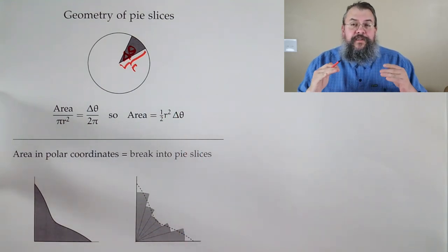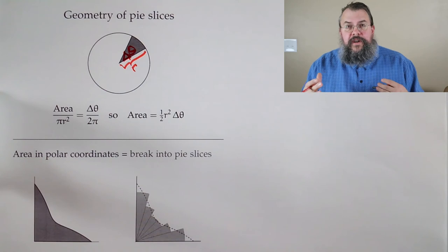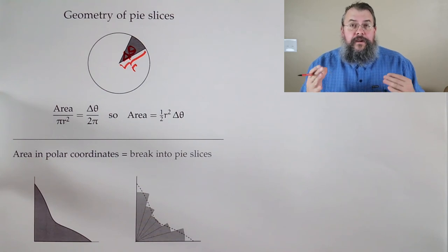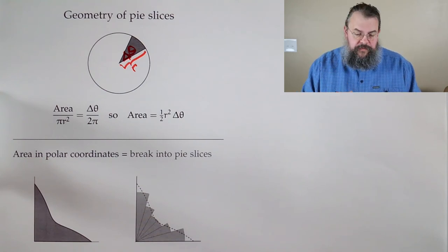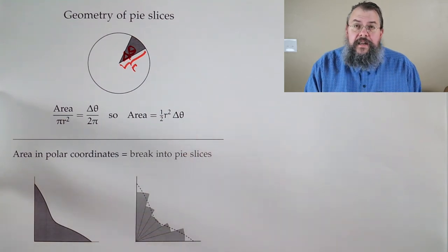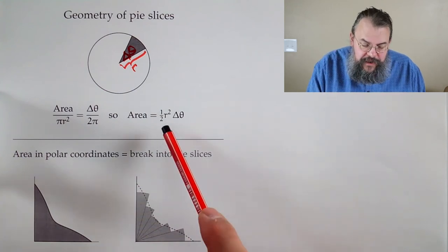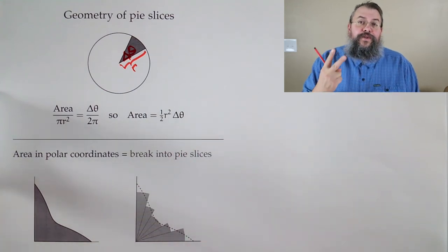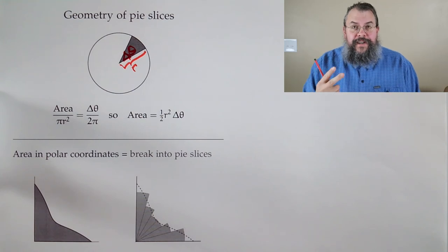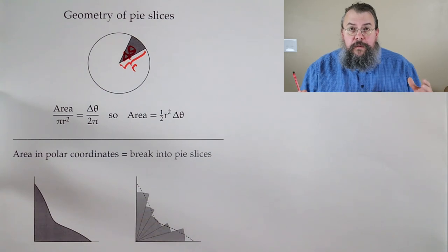Now, one way to see that this makes sense is to think about, well, OK, if I have an area, I should have two measurements of distance involved. You know, like length times width, that's two distances. And here, the change in theta is not a distance measurement. But the r squared, that's two distances, right? Because we square it. So it does make sense as a distance measurement. At least the units would work out appropriately.